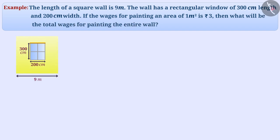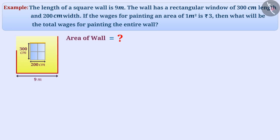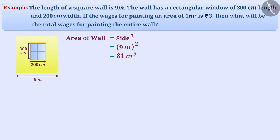First, we will find the area of the wall. The area of a square wall with side 9 meters will be side squared, equal to 9 meter squared, which is equal to 81 square meters.